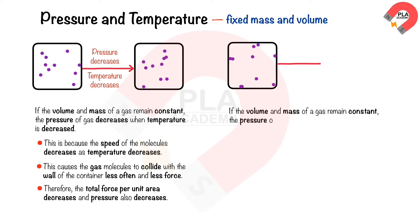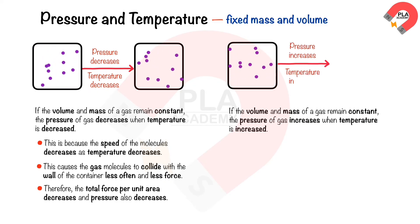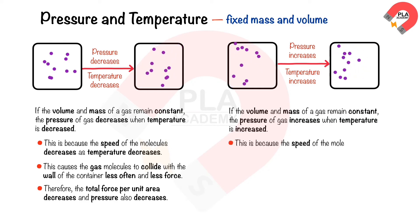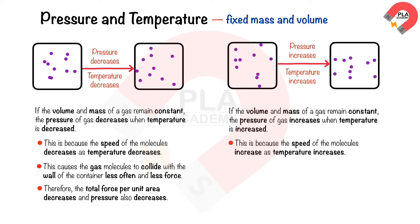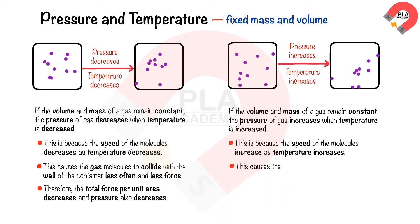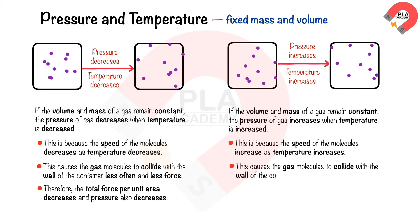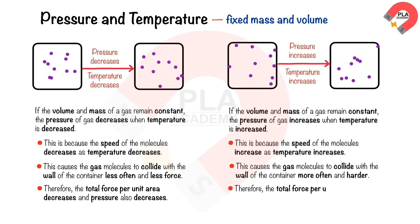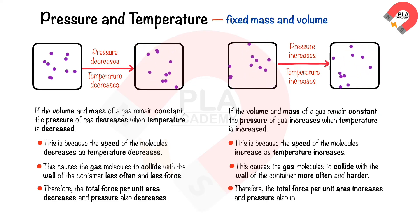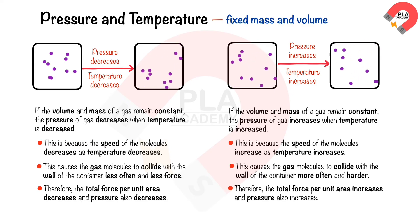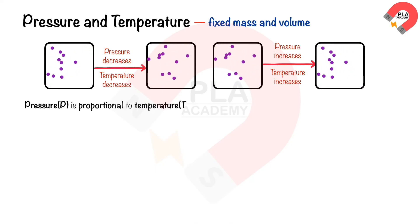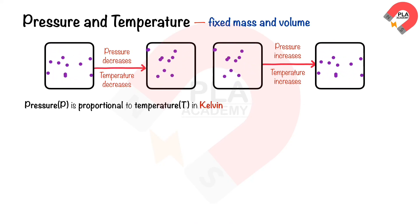If the volume and mass of a gas remain constant, the pressure of the gas increases when temperature is increased. This is because the speed of the molecules increases as temperature increases, causing the gas molecules to collide with the wall of the container more often and harder. Therefore, the total force per unit area increases and pressure also increases. From this information, we can see that the pressure of a gas is directly proportional to its temperature in Kelvin.